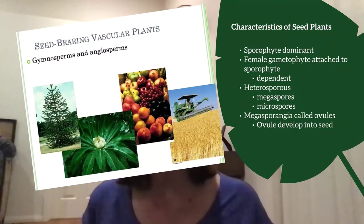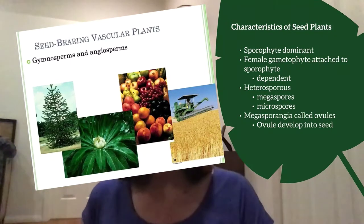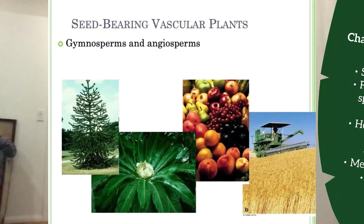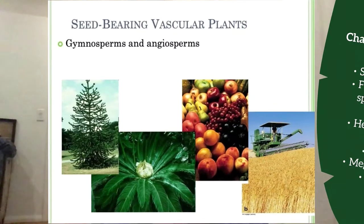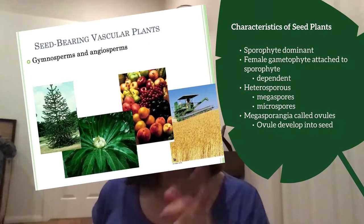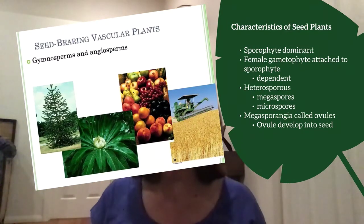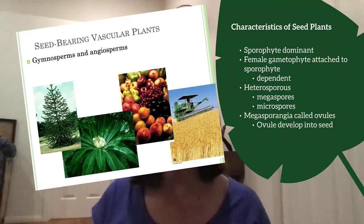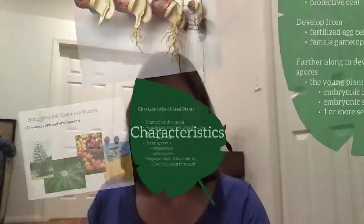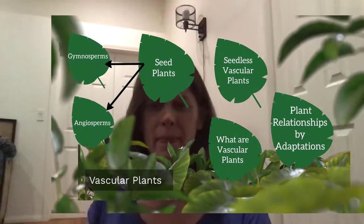We're going to look at two groups of seed plants: gymnosperms and angiosperms. These are mainly the plants that you're used to seeing, aside from ferns and others we looked at earlier. In a future lecture we're actually going to look at seeds in a lot more detail.